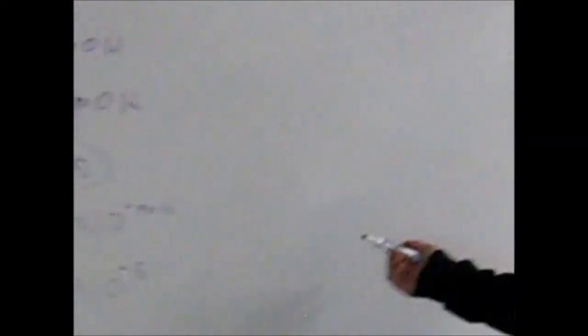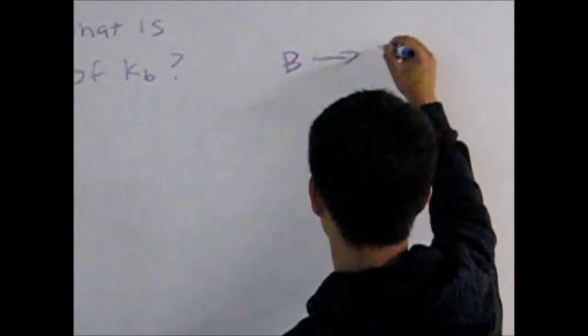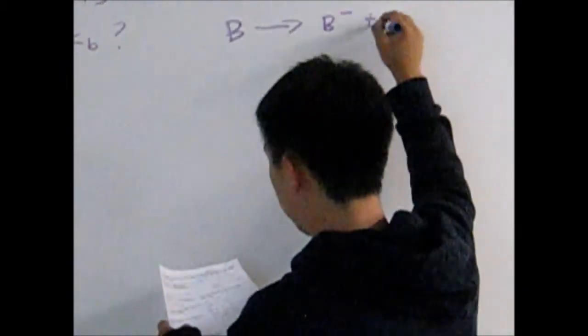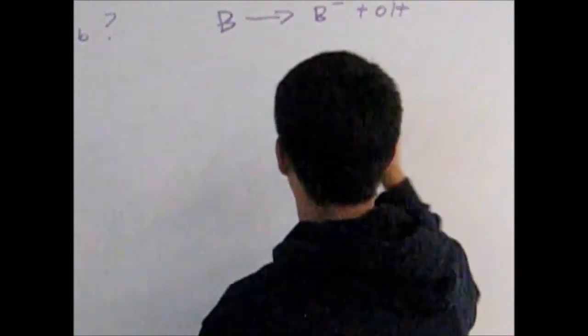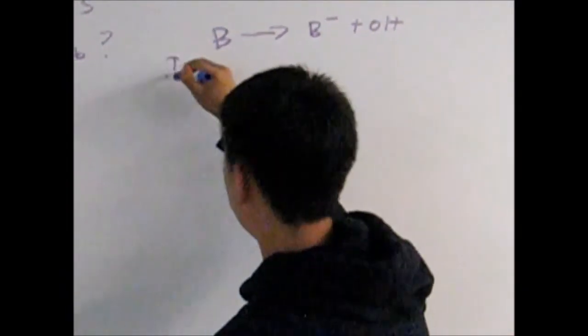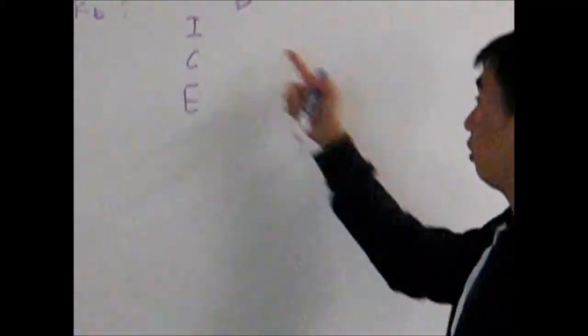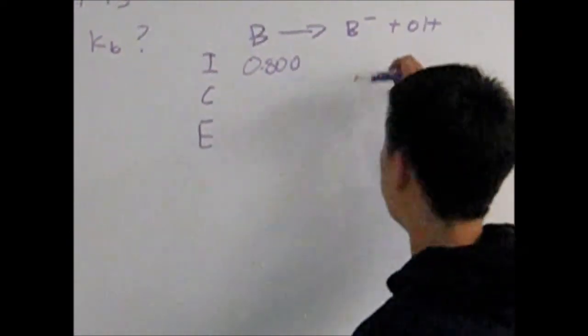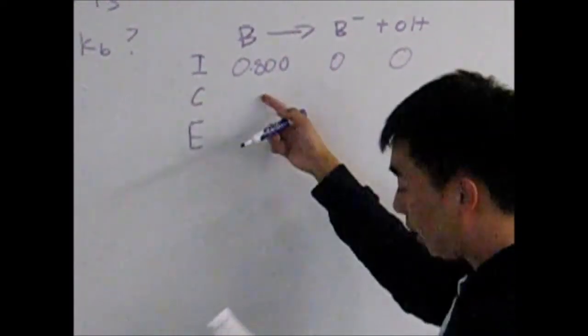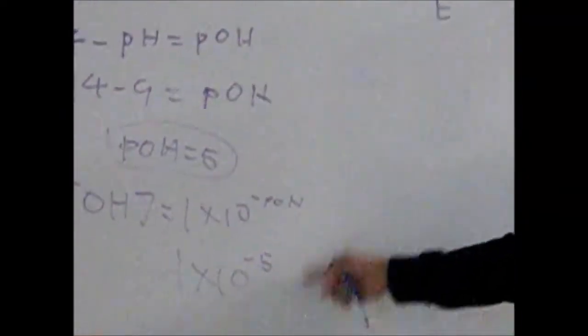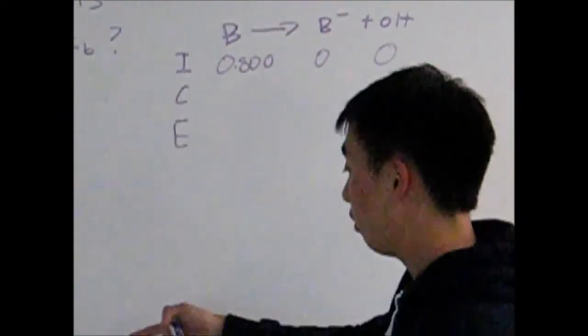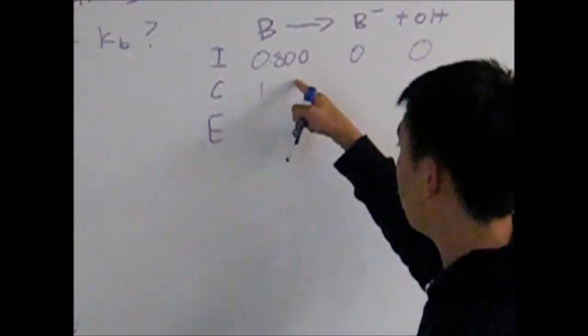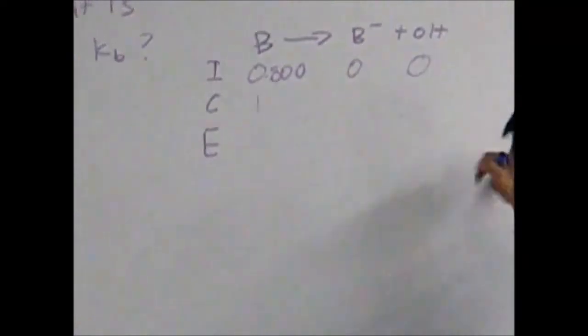It'll be base B plus H2O yielding BH+ plus OH-. Then our initial, change, and equilibrium. So the initial for B would be 0.8 molarity, the BH+ would be 0, and the OH would be 0. Because it's a forward reaction, the reactants will lose 1 times 10 to the negative 5, and the products would gain 1 times 10 to the negative 5.